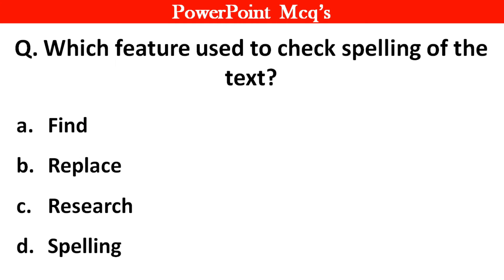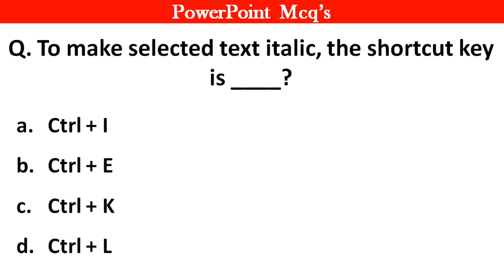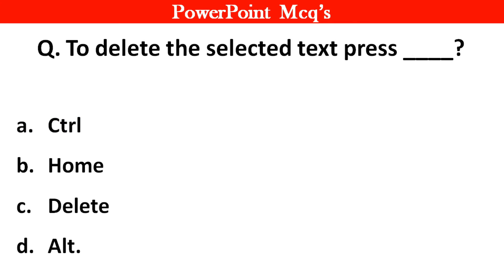Question 18: Which feature is used to check the spelling of text? Right answer is Option D: Spelling. Question 19: Which of the following is used to add text in a slide? Right answer is Option A: Text Box. Question 20: To make selected text italic, the shortcut key is dash. Right answer is Option A: Ctrl + I.